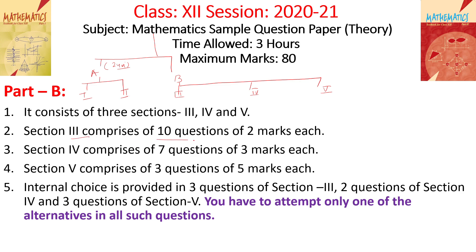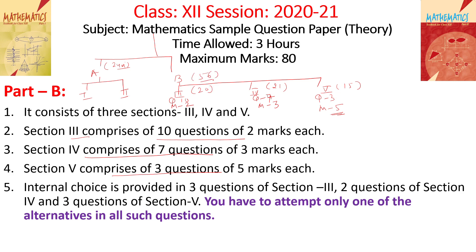Section 3 has 10 questions of 2 marks each. Section 4 has 7 questions of 3 marks each. Section 5 has 3 questions of 5 marks each. This gives Section 3 a weightage of 20 marks, Section 4 a weightage of 21 marks, and Section 5 a weightage of 15 marks — so Part B has a total weightage of 56 marks.